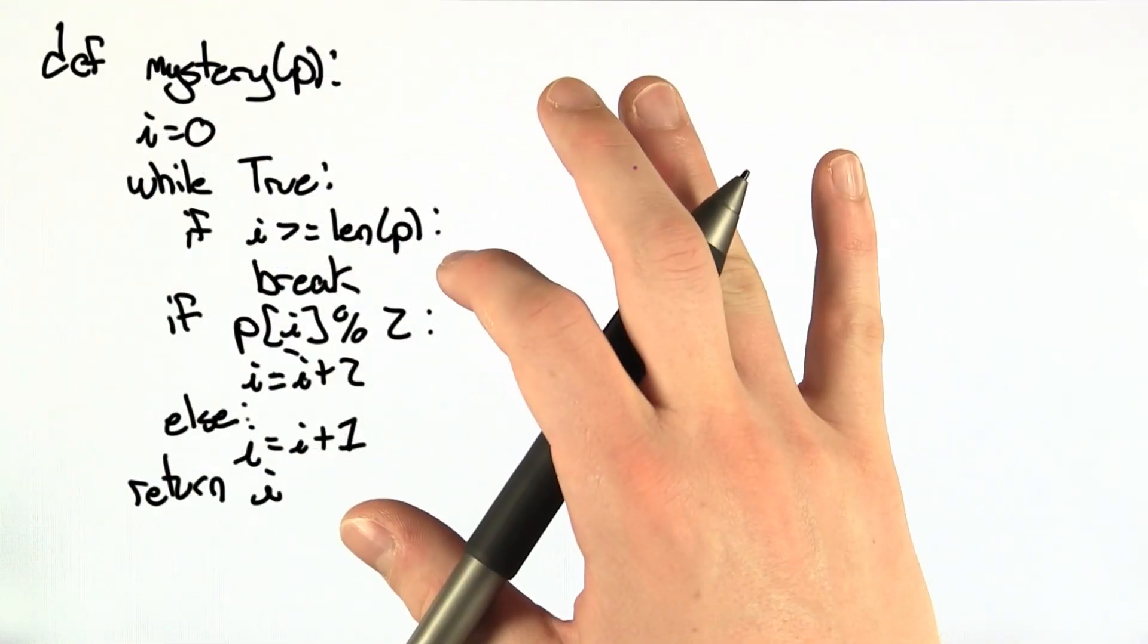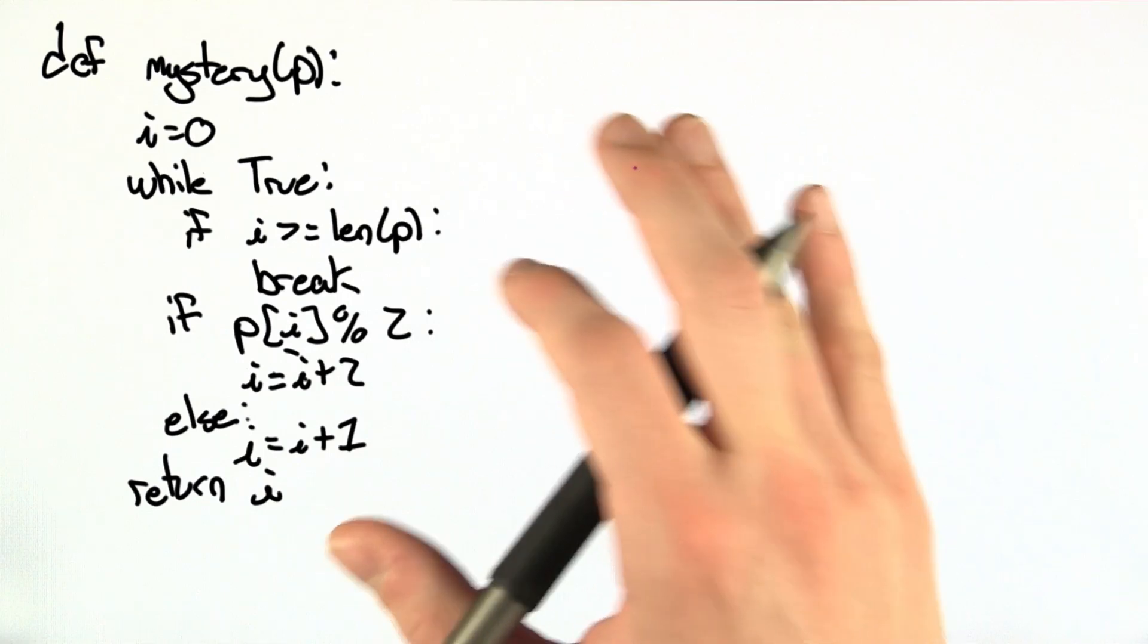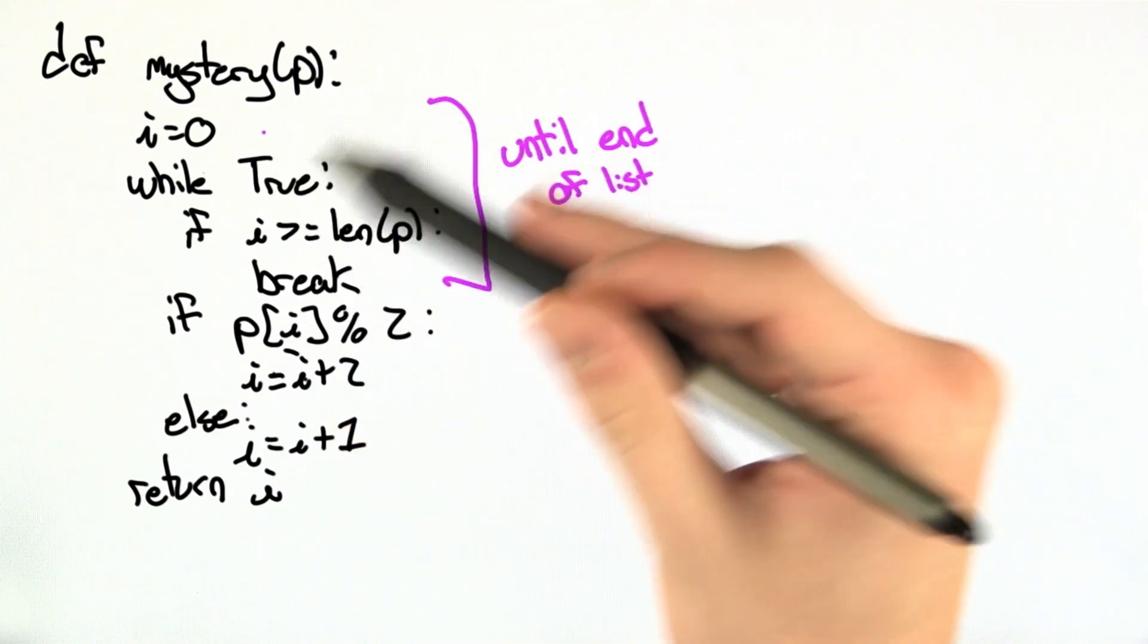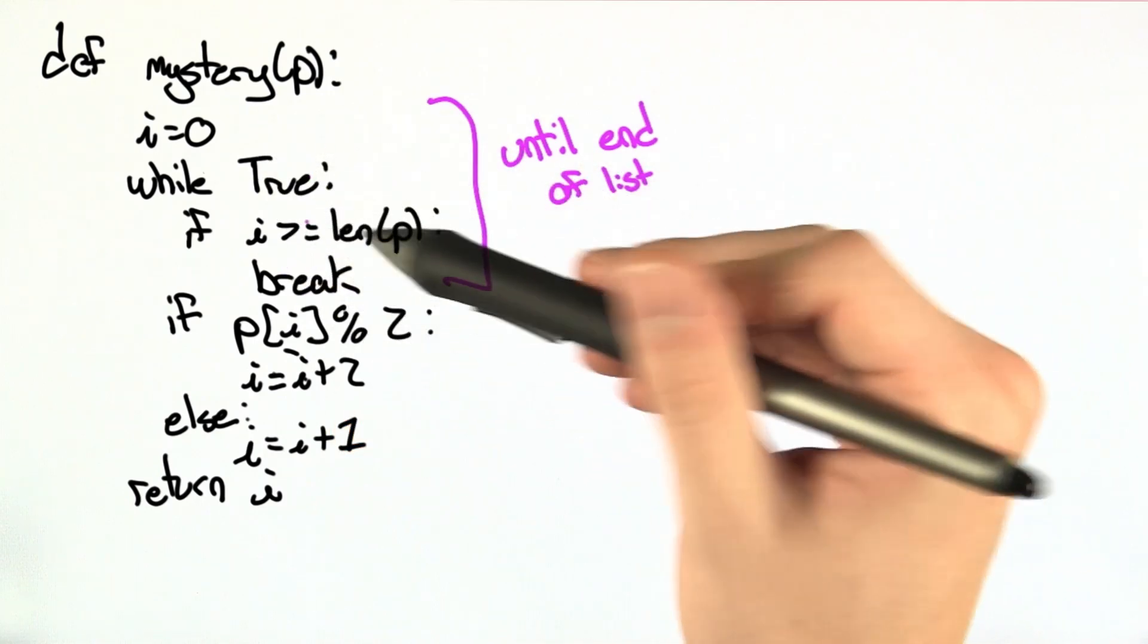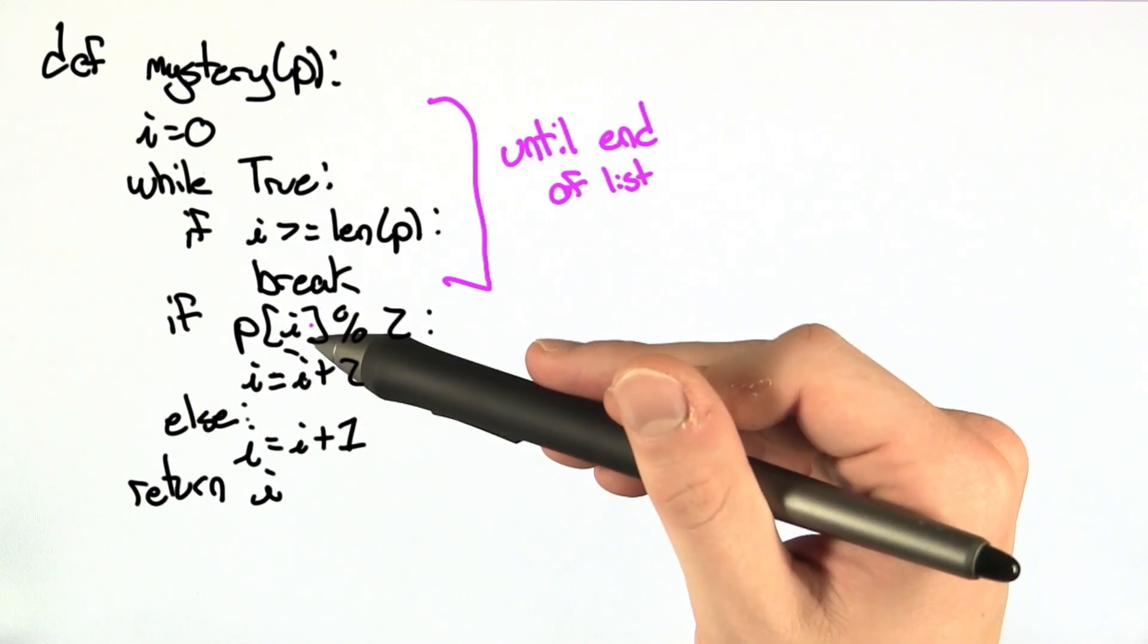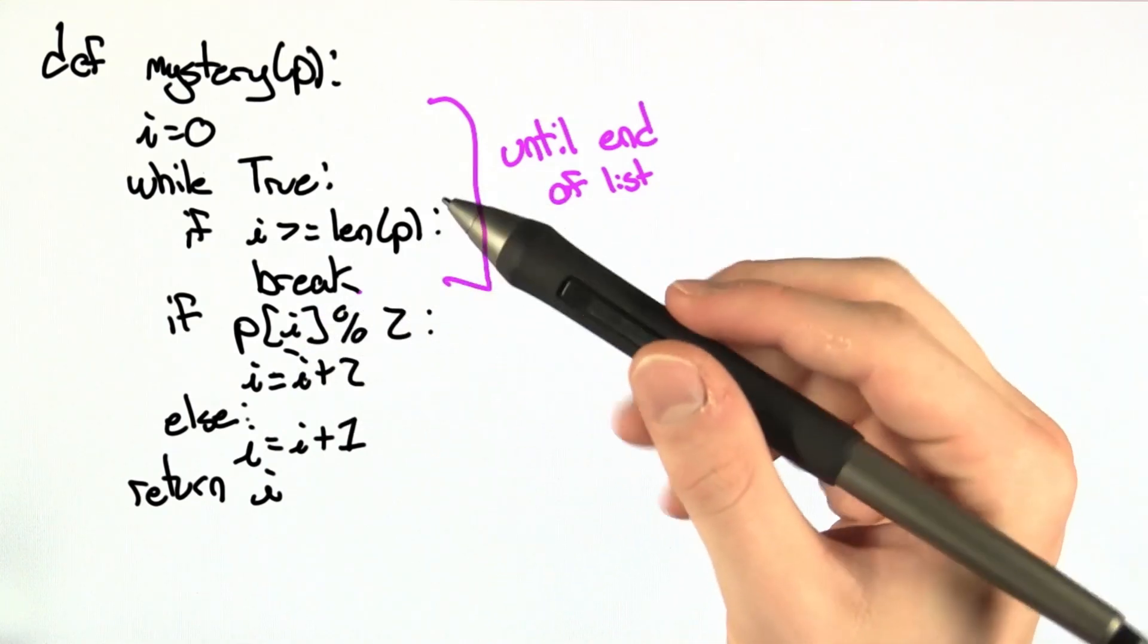And here we have our mystery function. You've never seen this before, but the general structure should be familiar. Here we have a while loop, and we set i to 0, and we're going to continue this while loop until i is greater than or equal to the length of p. And looking down here, we're basically going to be iterating through p. But we're going to do it a little different than normal.